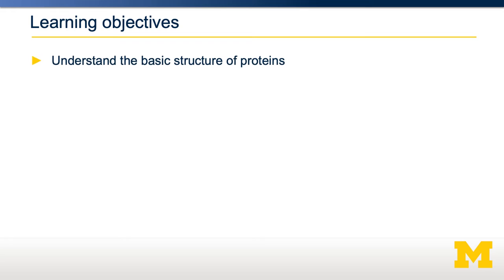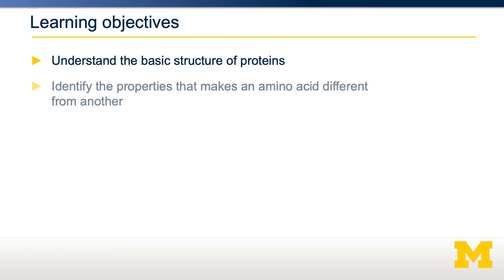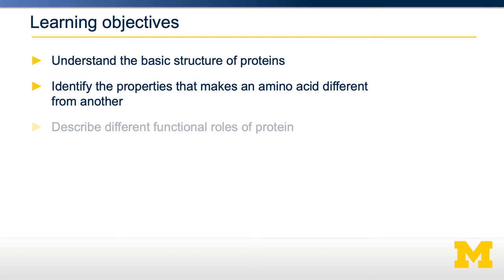In this video, we're going to talk about what is the basic structure of proteins, including the structure of amino acids. We're going to identify some of the properties that make amino acids different from each other, including whether or not they're essential and whether or not they can be converted into glucose or fatty acids. We're also going to describe the different functional roles of protein in our body. That will allow us to think about what would be some of the consequences of not having enough protein in your diet.